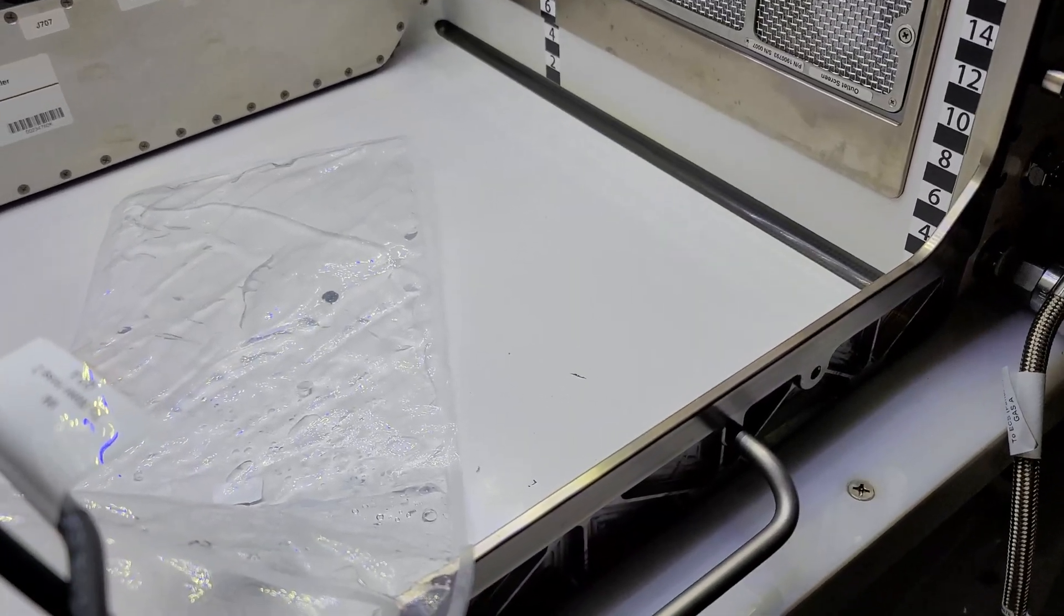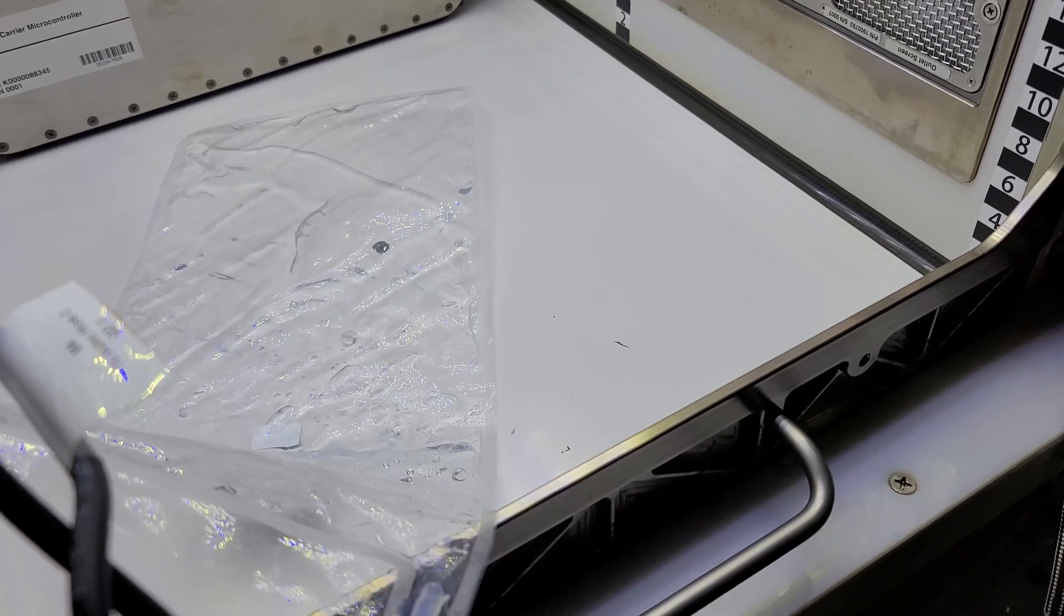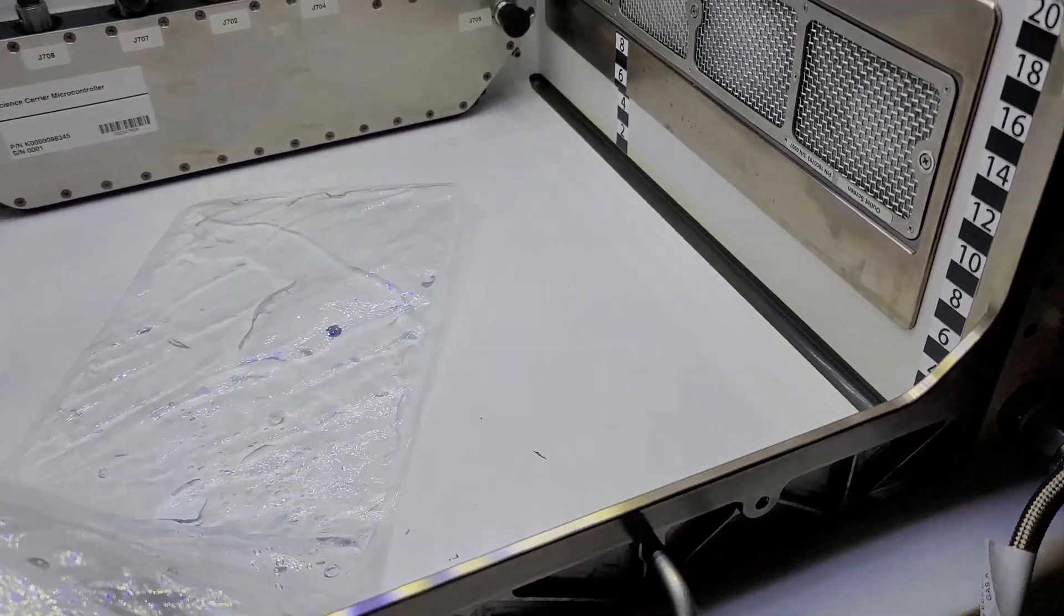From there, it's unpacked and installed into the unit and connected via all the lines that it has. The science carrier has all sorts of microcontrollers inside of it that are able to detect not only the water content in each quadrant.